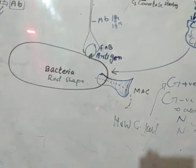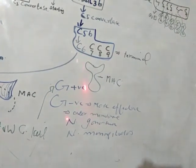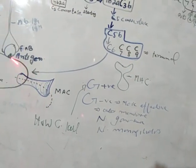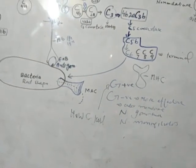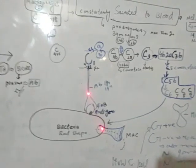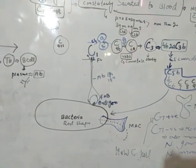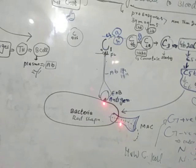Gram-positive bacteria, by contrast, have a thick peptidoglycan cell wall, so the membrane attack complex is less effective against them. This completes the classical pathway of the complement system, which is activated by antibody-antigen complexes and ultimately leads to the membrane attack complex. In the next lecture, I will discuss the alternative pathway of the complement system.